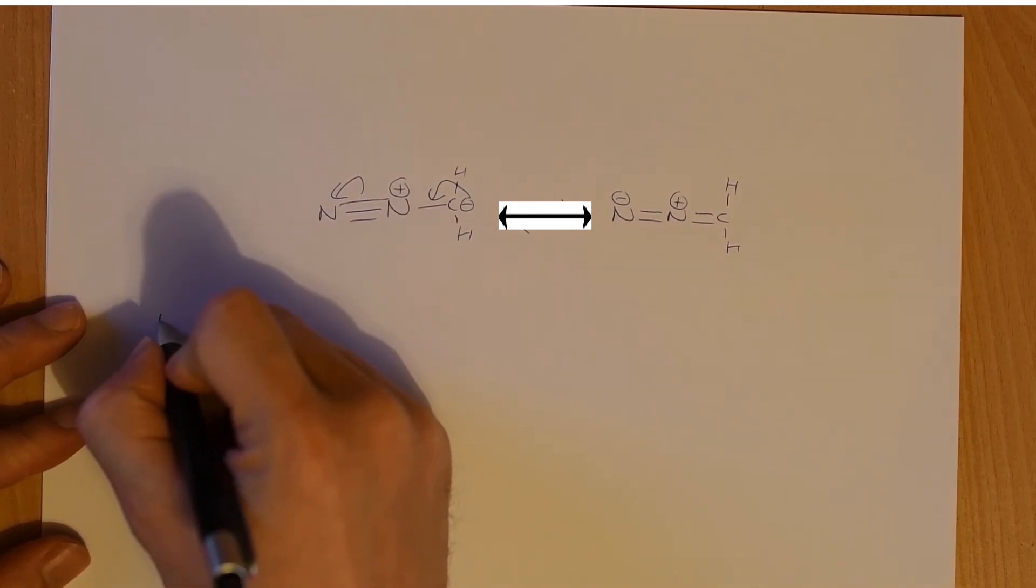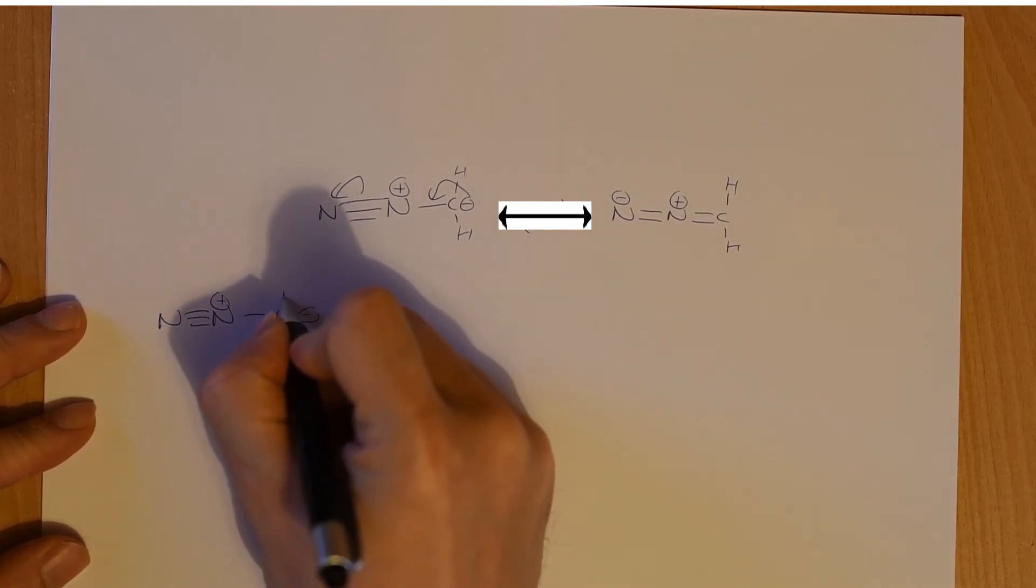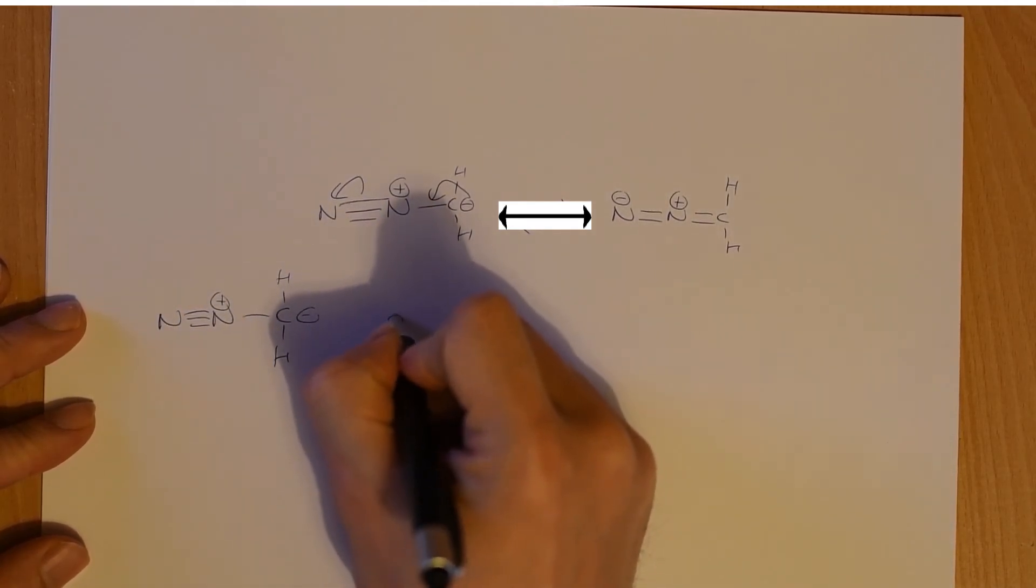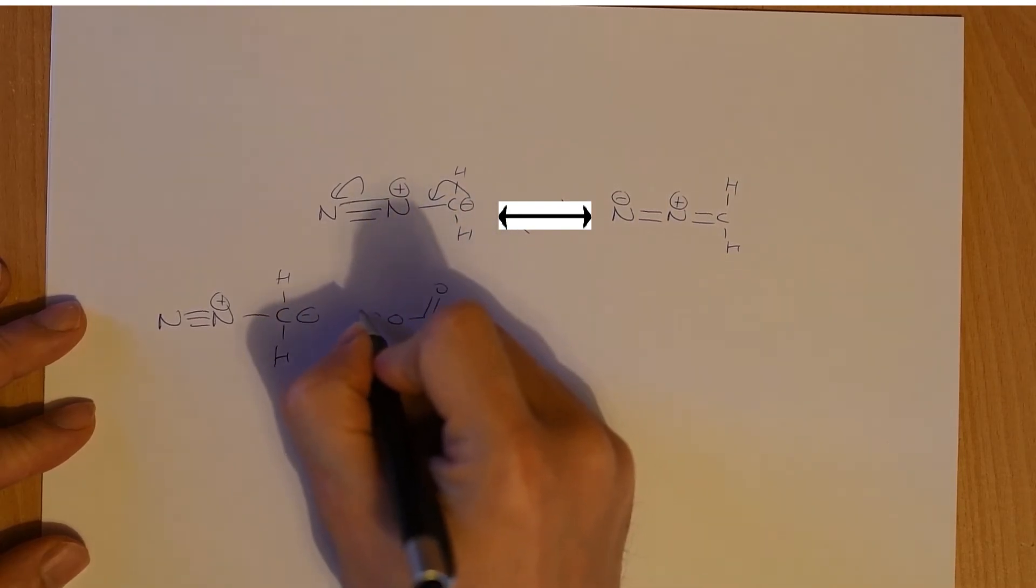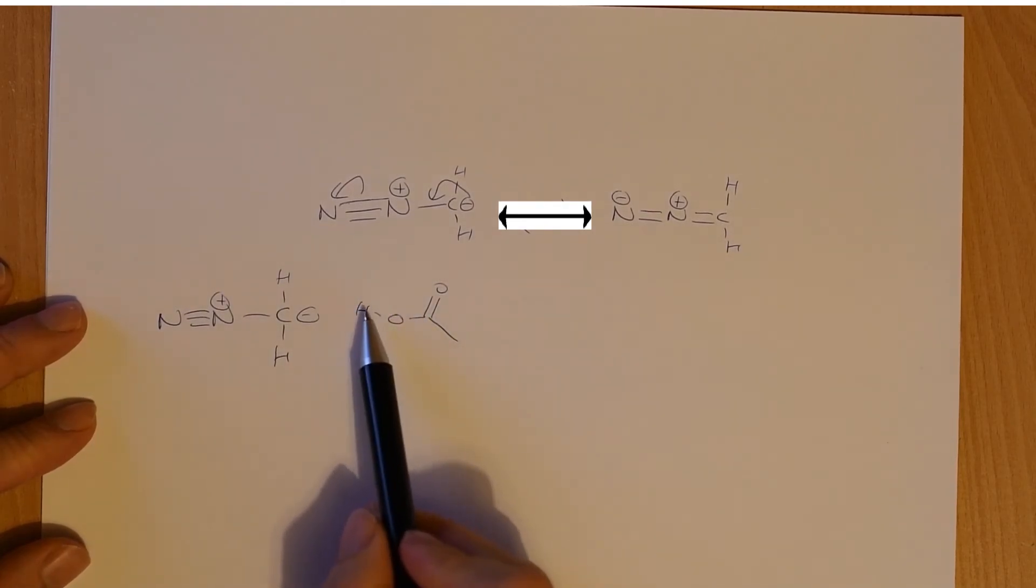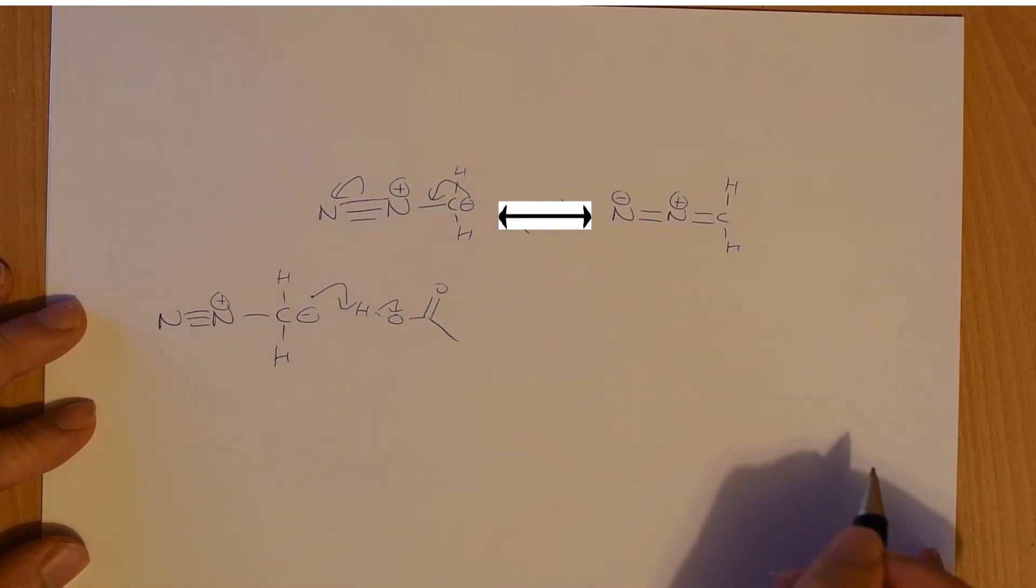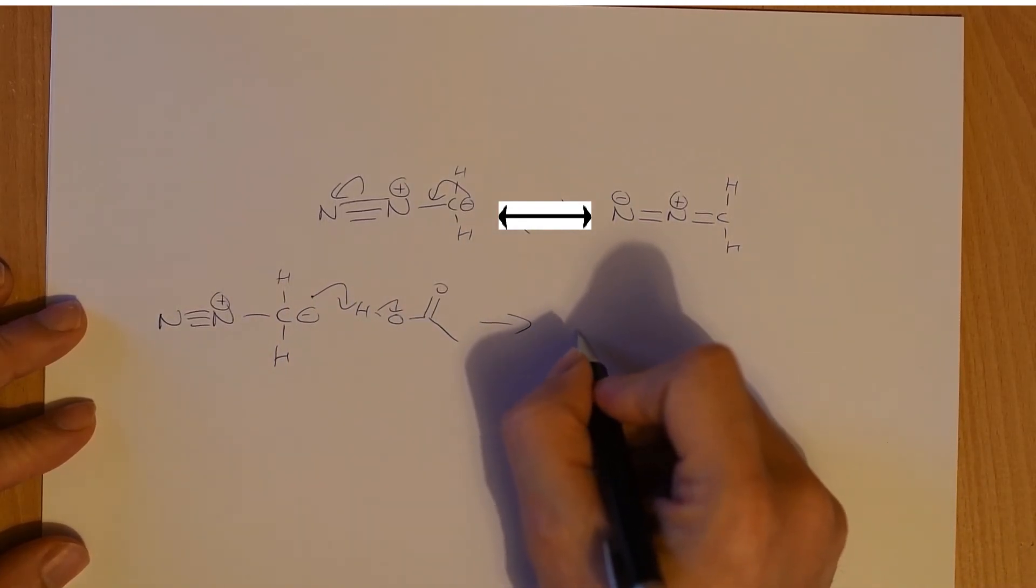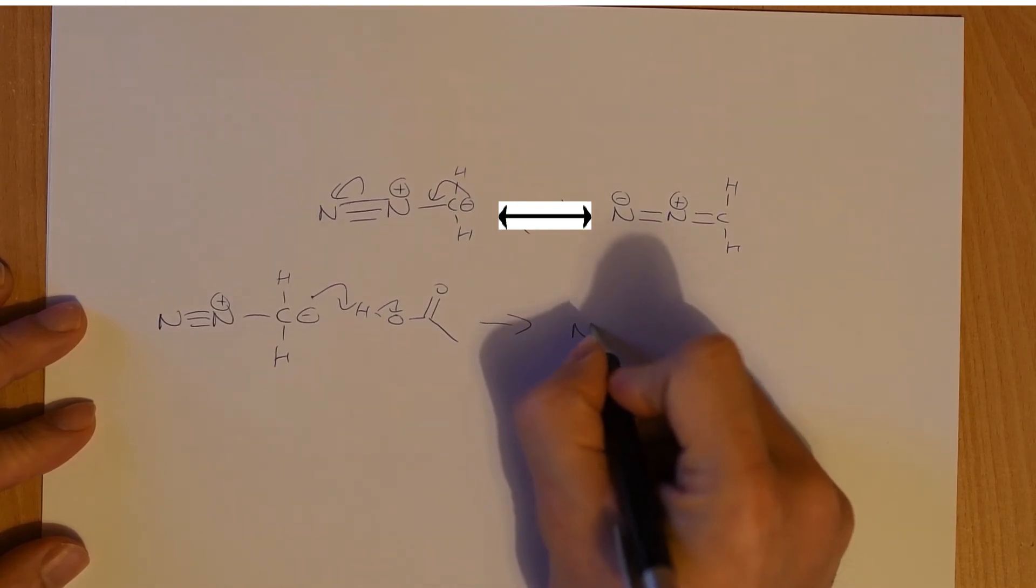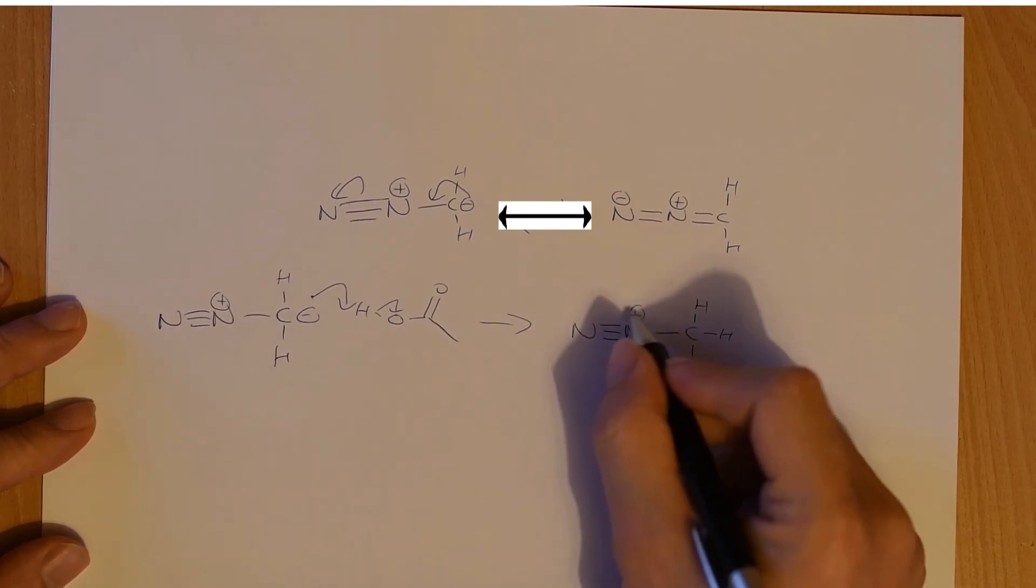So if we take our diazomethane and put it in with a carboxylic acid, what's going to happen? Well, carboxylic acid, weak acid, reasonable base, this is just going to take a proton, and what do we have now? Well, and maybe you noticed this during the Nierenstein reaction, maybe you didn't, but we have a methyl group with an incredibly good leaving group attached to it.